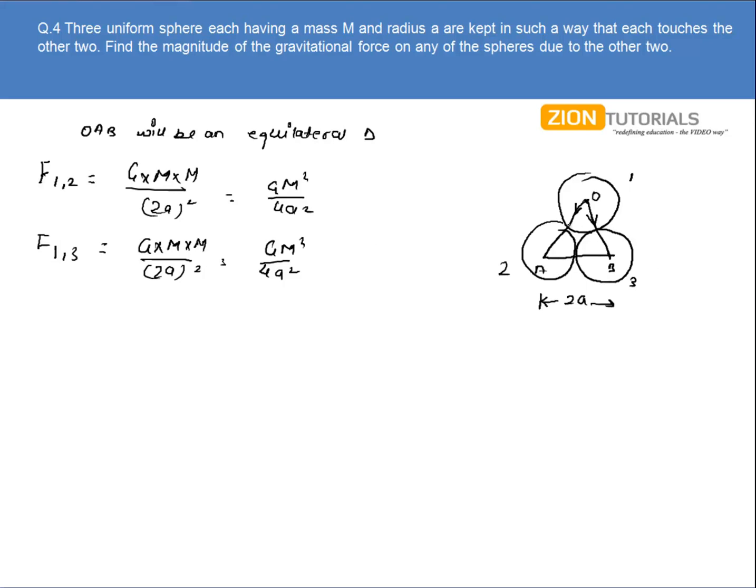Now since it is an equilateral triangle, this angle will be 60 degrees. Now what I'll do is I'll draw a perpendicular line like this and resolve the components, that is force F12 and F13 along these two axes.